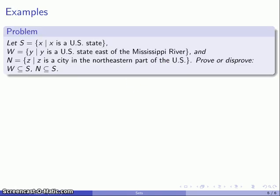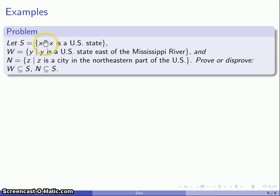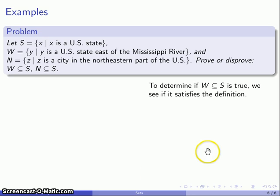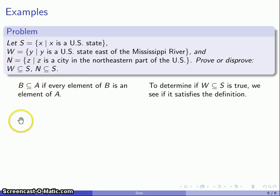Let's take a look at a couple of possibilities. Let S = {x | x is a U.S. state}, W = {y | y is a U.S. state east of the Mississippi River}, and N = {z | z is a city in the northeastern part of the U.S.}. We want to prove or disprove a couple of subset relationships. To examine whether this subset relationship holds, we can see if it satisfies the definition of being a subset. For reference: B ⊆ A if every element of B is an element of A.